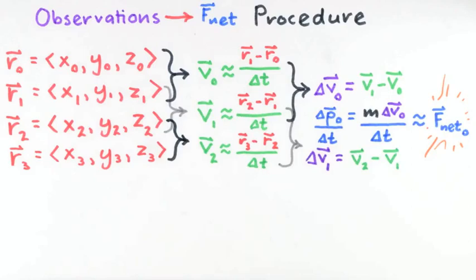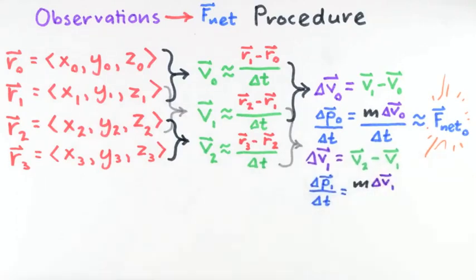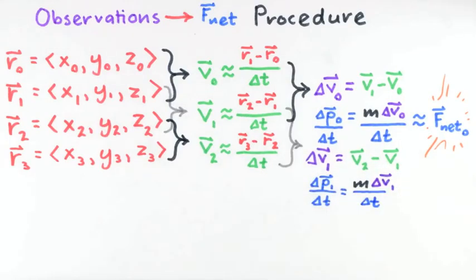So we obtain a new change in velocity, delta v, then from that, a new delta p, and then a new delta p over delta t, and therefore a new estimate of f net, that is, delta t later in time than our last estimate.